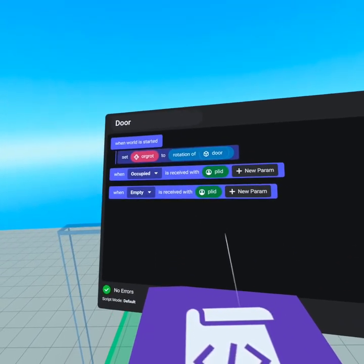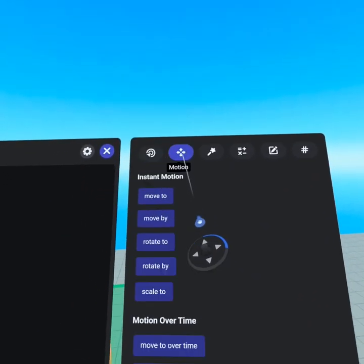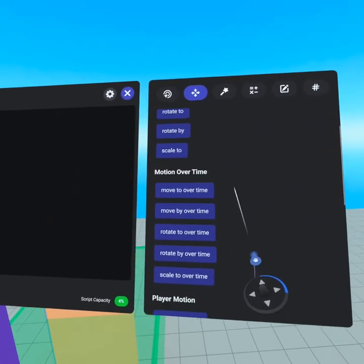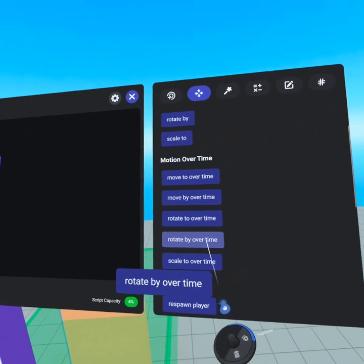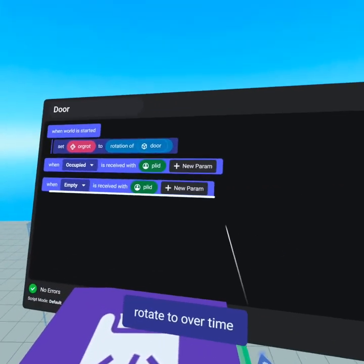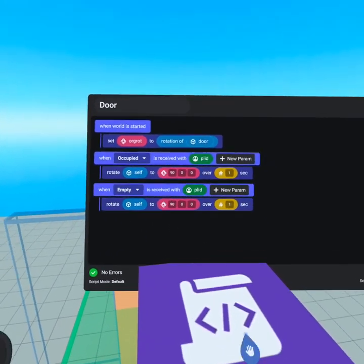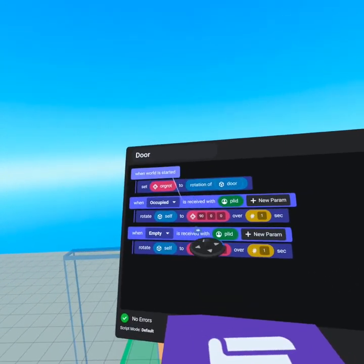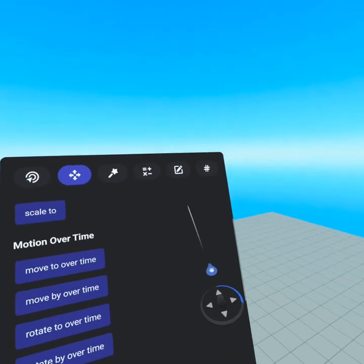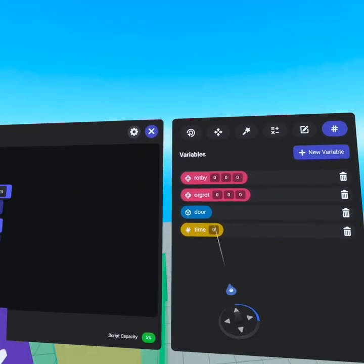Now that we have that set up, the next thing is to come to our motion tab, go to motion over time and grab rotate to over time. Rotate by is not a good one to use when you're trying to get exact positions like a door. That's why we are saving the origin rotation, because it allows us to create our own rotate by.